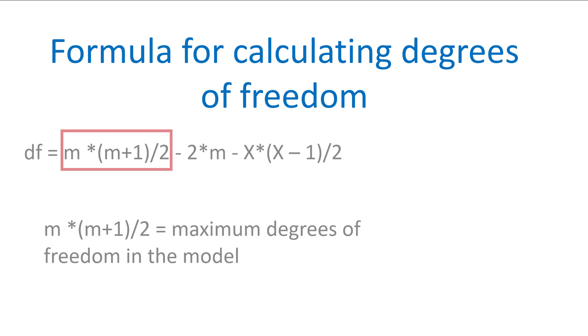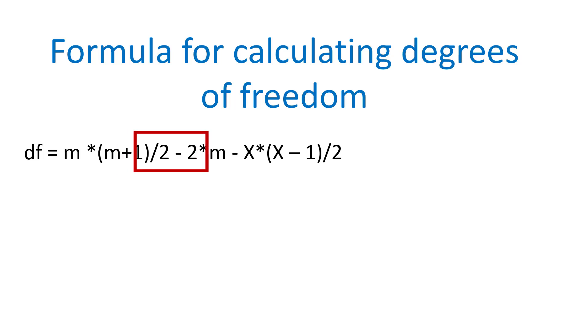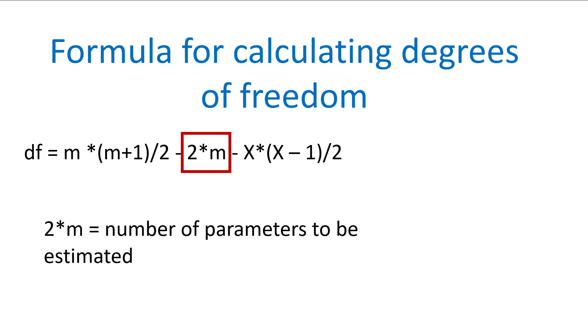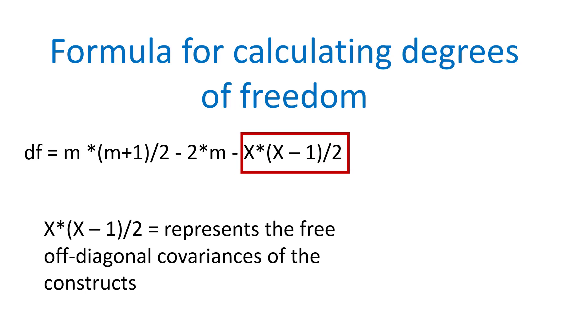Looking at the pieces of this formula: the first part, m times (m+1) divided by 2, gives us the maximum degrees of freedom in the model. The next part, 2 times m, gives us the number of parameters to be estimated. The last part, X times (X-1) divided by 2, represents the free off-diagonal covariances of the constructs—again, the independent constructs in your model.